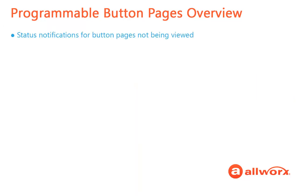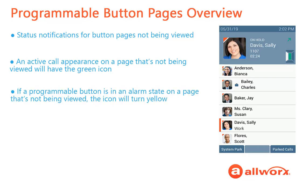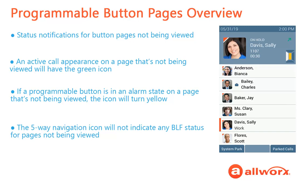The five-way navigation icon provides status notifications for button pages not being directly viewed. If a call is active on an appearance for a page that is not being viewed, the corresponding segment of the five-way navigation icon will turn green. If a programmable button for a page not being viewed is in an alarm state, such as a hold reminder, the corresponding segment will turn yellow. The five-way navigation icon will not indicate any BLF status for pages not being viewed — BLF status is only visible for a button page directly being viewed.